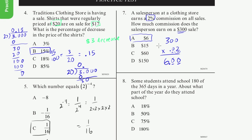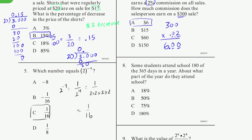A way you could do this in your head: the salesperson makes a 2% commission, so for every $100 he makes $2, because 2% is the same as 2 out of 100. He sold $300, so that's 3 times $2, which is $6. Whatever is easier for you to understand, that's what you should do.